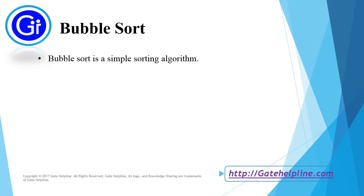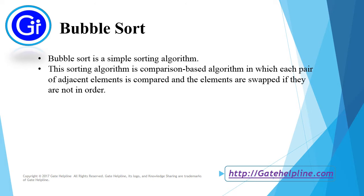Now we will see what is bubble sort. Bubble sort is a simple sorting algorithm. This sorting algorithm is comparison-based algorithm in which each pair of adjacent elements is compared and the elements are swapped if they are not in order.